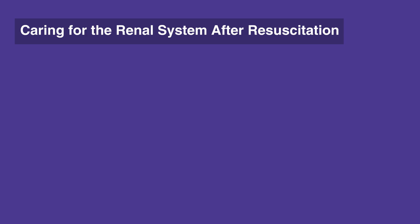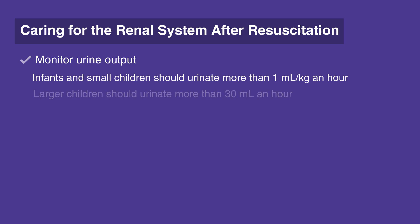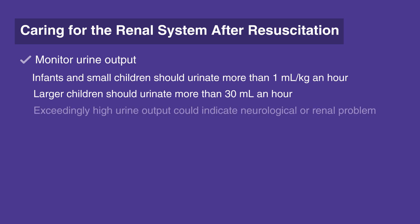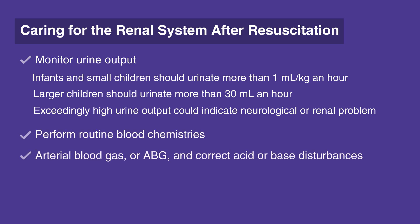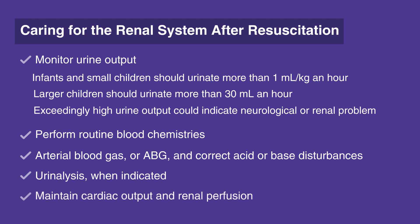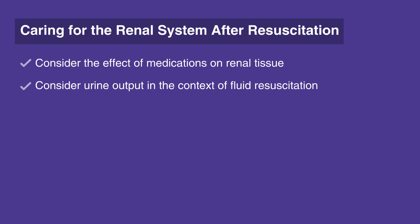When caring for the renal system after resuscitation, follow this checklist. Monitor urine output. Infants and small children should urinate more than 1 mL per kg per hour. Larger children should urinate more than 30 mL per hour. Exceedingly high urine output could indicate neurological or renal problems, or diabetes insipidus. Perform routine blood chemistries. Arterial blood gas, or ABG, and correct acid-base disturbances. Urinalysis when indicated. Maintain cardiac output and renal perfusion. Consider the effect of medications on renal tissue, or nephrotoxicity. Consider urine output in the context of fluid resuscitation.